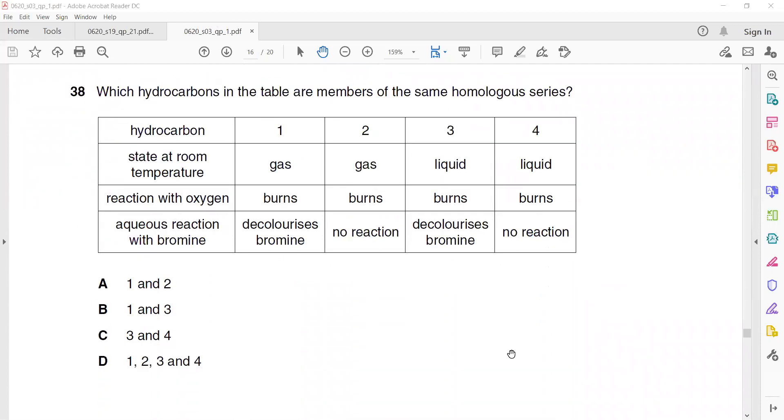Question 38. Which hydrocarbons in the table are members of the same homologous series? One and three, because one and three. Or two and four, but two and four is not an option here. So one and three because they have the same similar chemical properties.